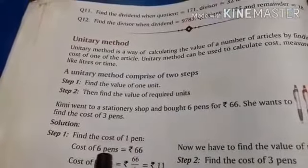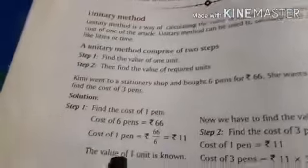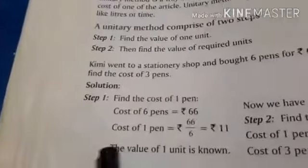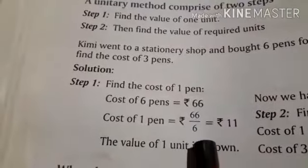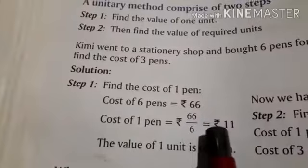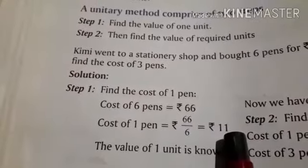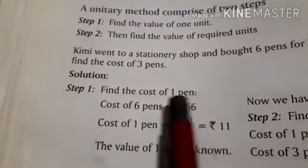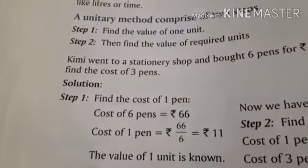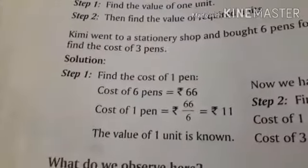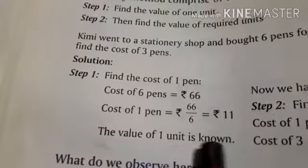Cost of 6 pens is equal to Rs. 66. Therefore, cost of 1 pen is equal to Rs. 66 divided by 6, which is equal to Rs. 11. So you got the cost of 1 pen, that is Rs. 11. Now the value of 1 unit is known.